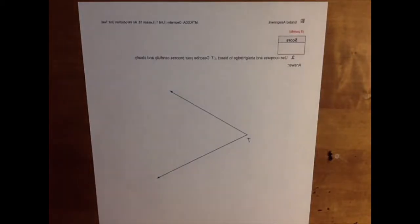Use compass and straightedge to bisect angle T. Describe your process carefully and clearly.